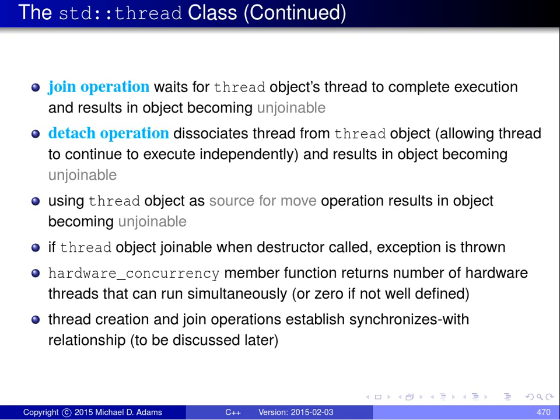Two key operations for Thread objects are join and detach. A join operation waits for a Thread object's thread to complete executing and results in the Thread object being marked unjoinable. A detach operation dissociates a thread from the Thread object, allowing the thread to continue executing independently from the Thread object, and the Thread object becomes marked unjoinable.